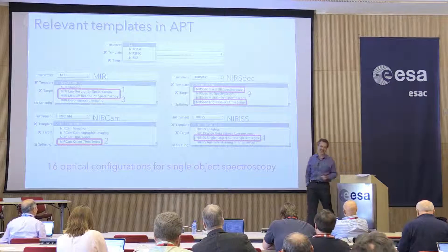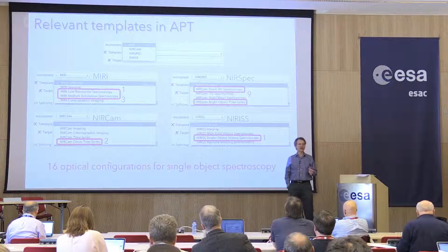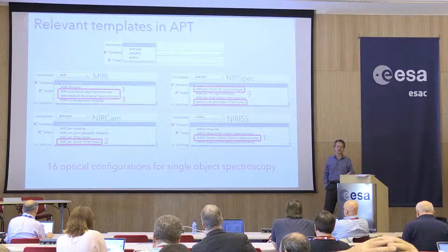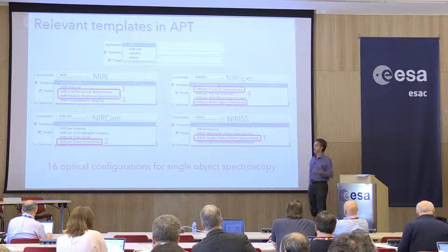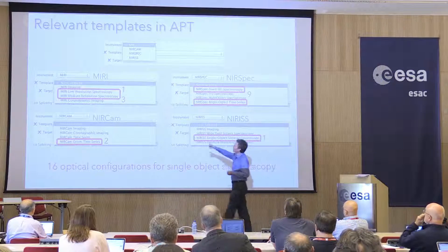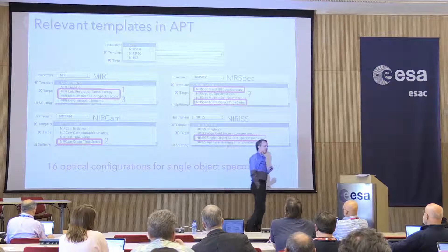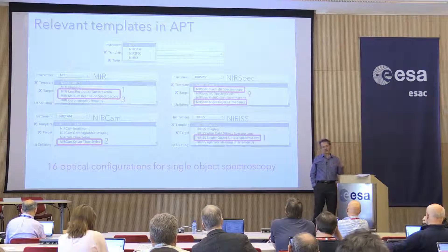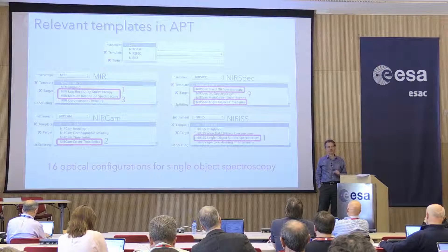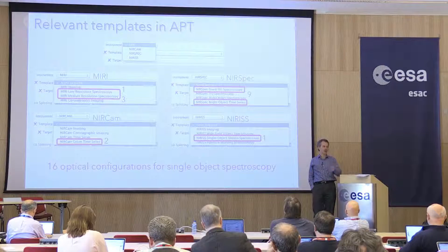I'm still going to focus mainly on exoplanets. These are the 16 science templates currently defined in APT, 4 per instrument. I've highlighted in red the ones I think we're talking about that might be used for single object spectroscopy. One of them hasn't been mentioned yet, but I will mention it. I did include the MIRI medium resolution spectroscopy, which is an IFU. I left the NIRSpec one out because I think you do want to use it for 2D spectroscopy.